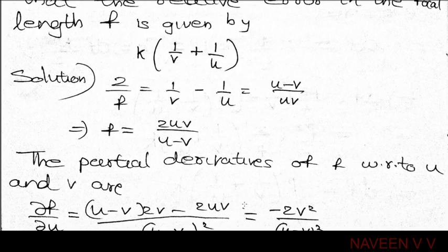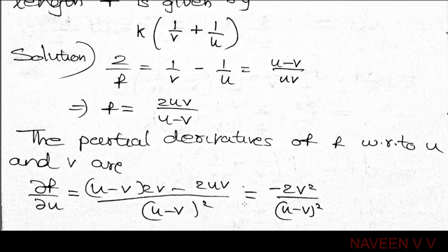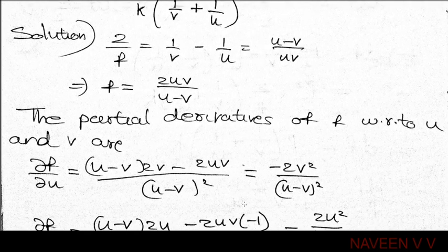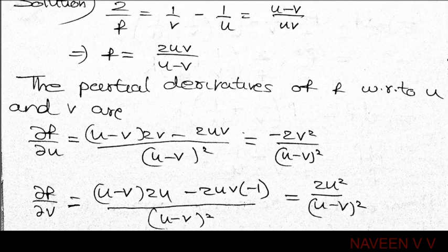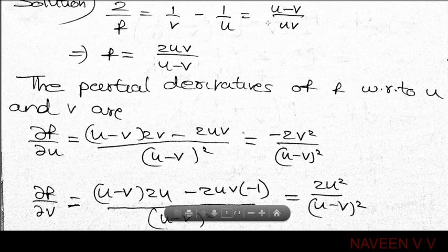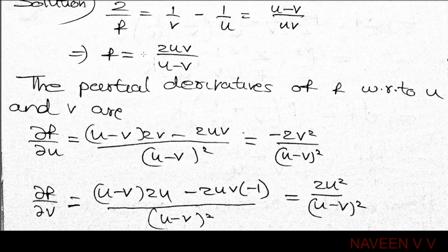Given 2/f = 1/v minus 1/u, cross-multiplying gives (u minus v) / uv, so f = 2uv / (u minus v).